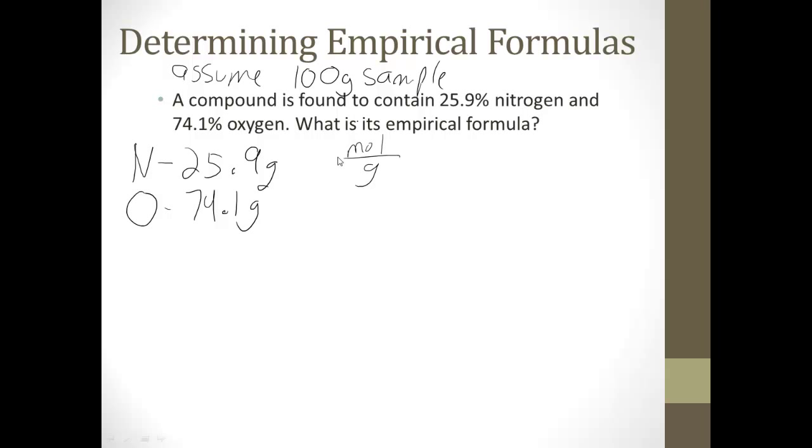Next I need to convert to moles for both of these. So for nitrogen, I'm going to do what you want over what you got. I want moles. I've got grams, so grams per mole. Grams is going to go on the bottom. And nitrogen is 14.007. So I'm just going to say 14.0 for this one. 14.0 grams per mole. My grams will cancel. And I end up with 25.9 divided by 14, and I get 1.85 moles nitrogen.